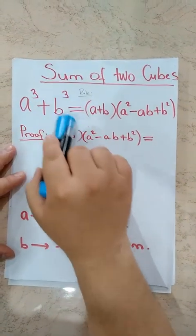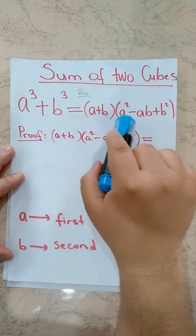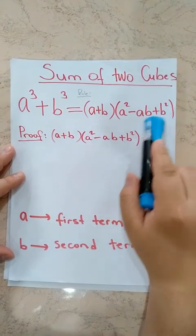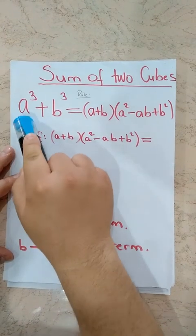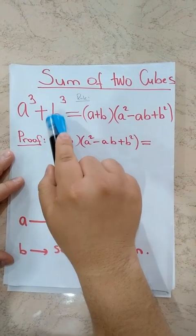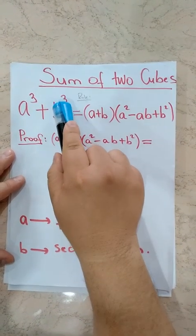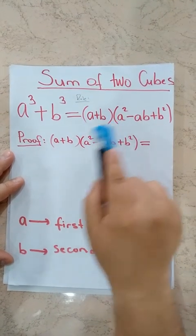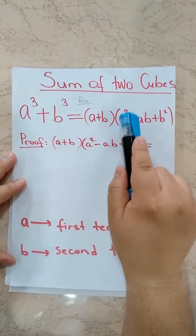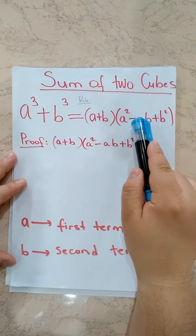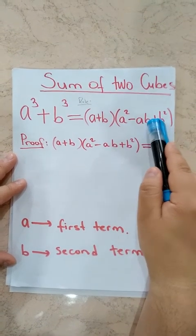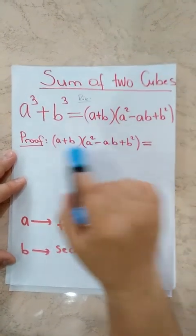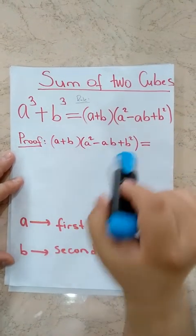A cubed plus B cubed is equal to A plus B times A squared minus AB plus B squared. It means the first term's cube plus the second term's cube is equal to first term plus second term, times first term squared minus first term times second term plus second term squared. We have a proof here.